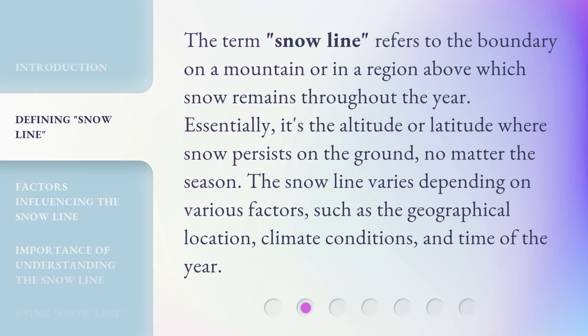The term "snowline" refers to the boundary on a mountain or in a region above which snow remains throughout the year. Essentially, it's the altitude or latitude where snow persists on the ground, no matter the season.